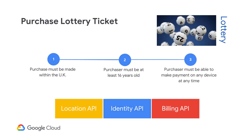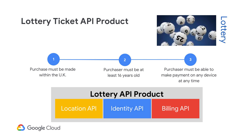Once the minimum qualifications have been met and the player is ready to purchase, the application must provide the ability to pay. The billing API allows the application to accept payment and the player to complete the purchase of lottery tickets. The API product is formed as a collection of APIs that provides the user with the experience of purchasing a lottery ticket and ensuring that the minimum qualifications are met: purchase must be made within the UK, and the purchaser must be at least 16 years of age.